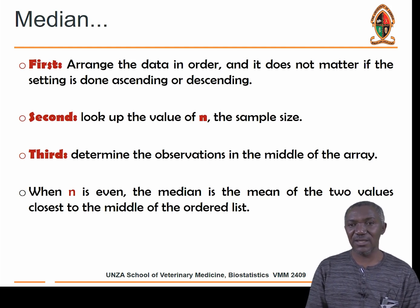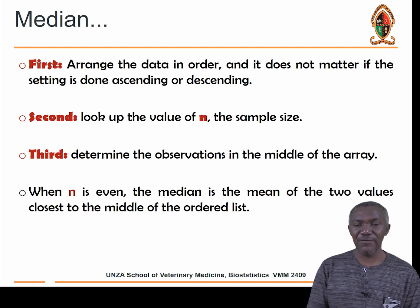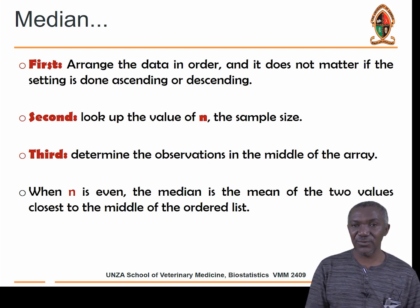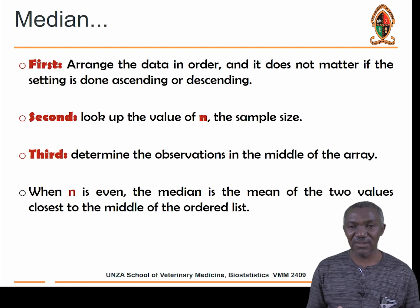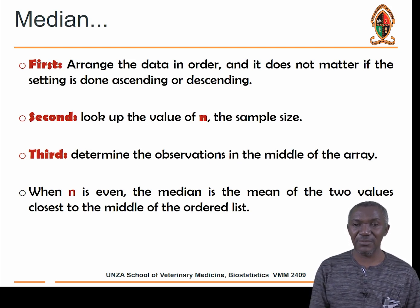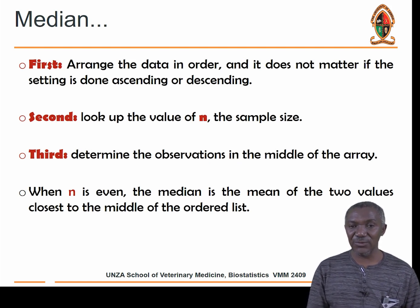For example, if you have eight numbers — which is even — to find the number that separates the two halves, you find it between the fourth and fifth number. Add the number in the fourth position and the number in the fifth position, then divide by two. That gives you the median of that particular dataset.